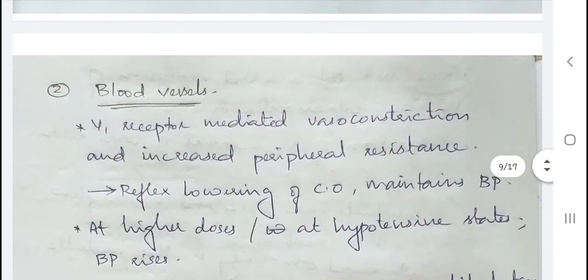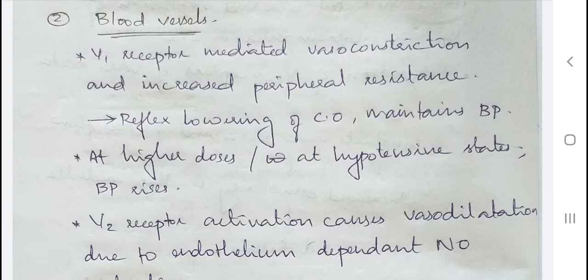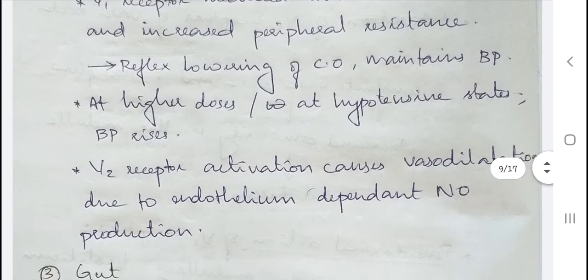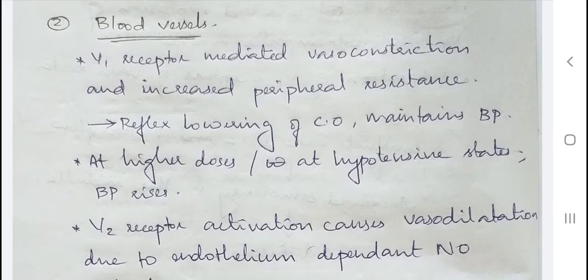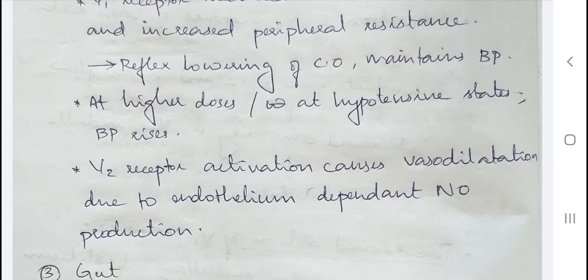Another site of AVP action is blood vessels, where V1 receptors are primarily located. AVP binding to V1 receptors causes vasoconstriction and increased peripheral resistance, leading to reflex lowering of cardiac output, helping maintain BP at normal levels. At higher doses, BP will rise. V2 receptor activation causes vasodilation due to endothelium-dependent nitric oxide production.